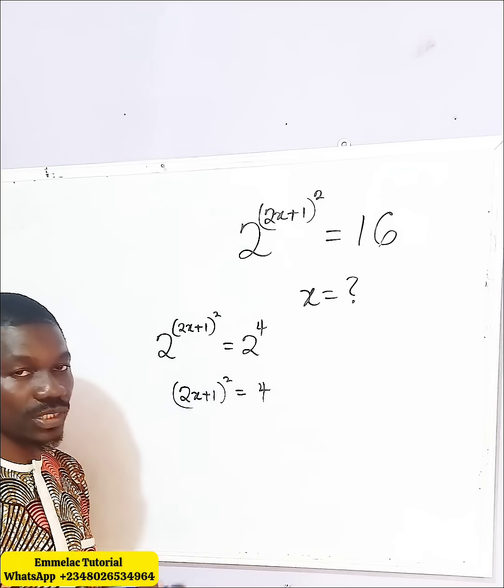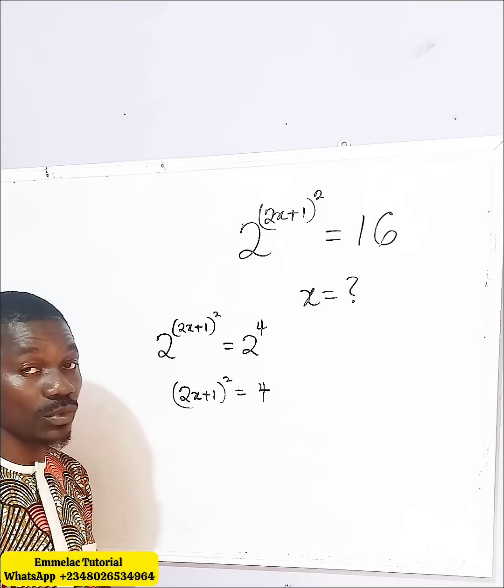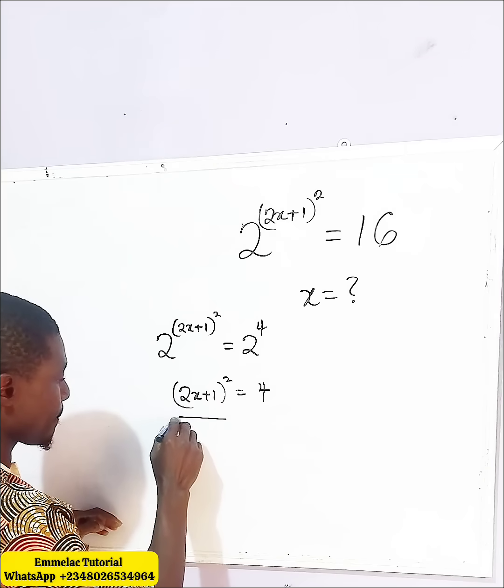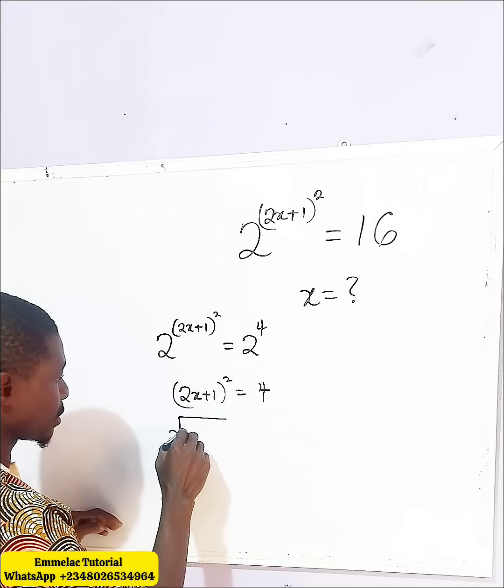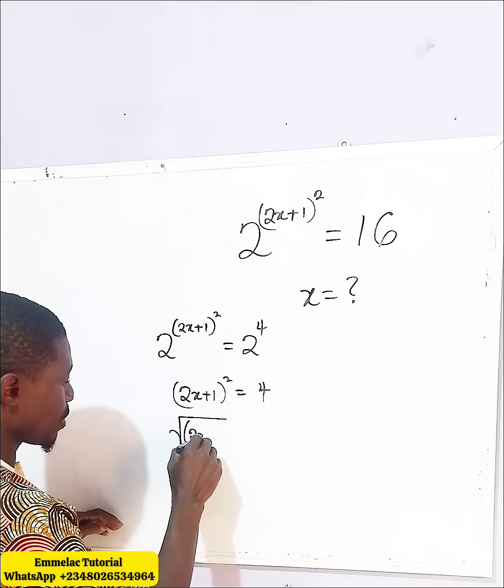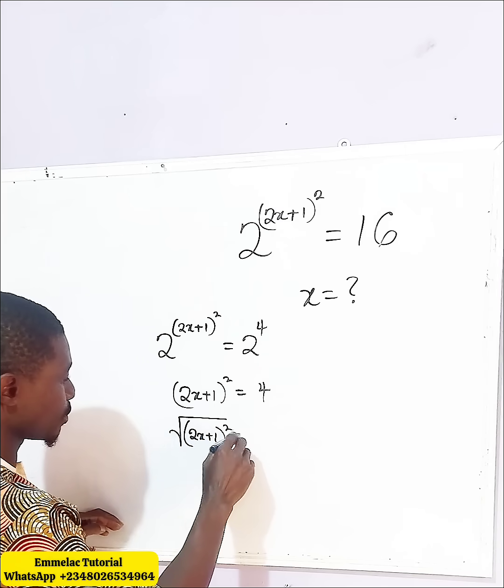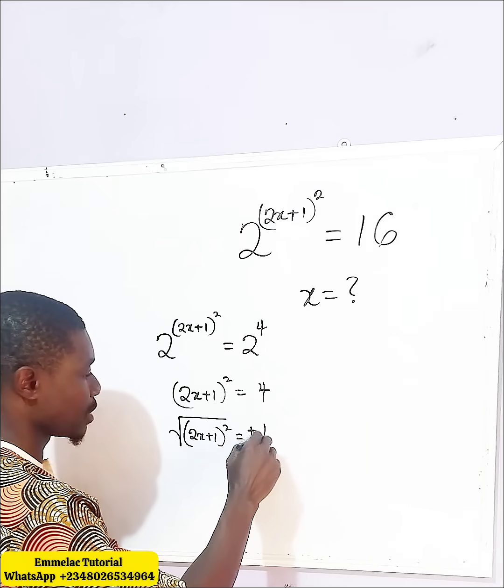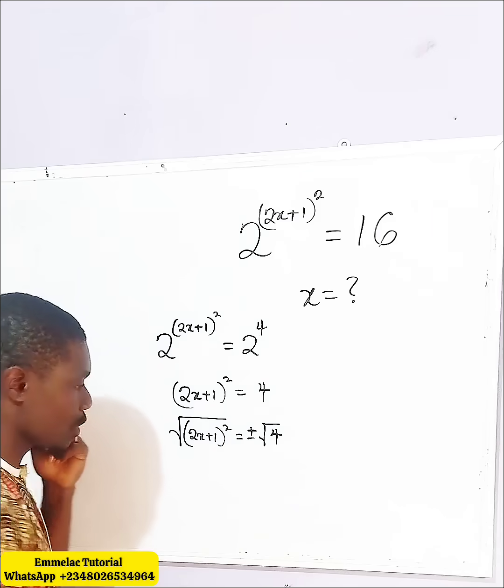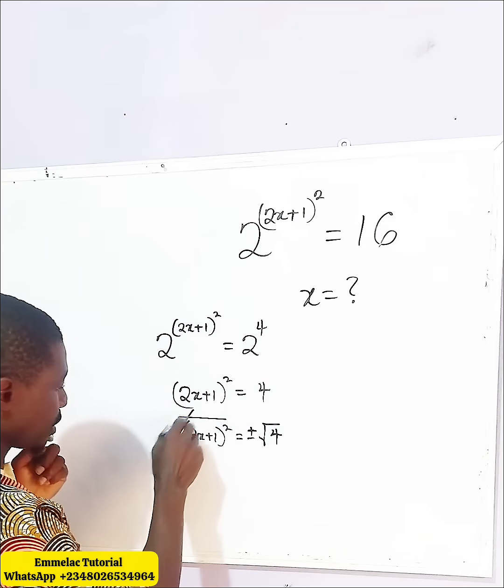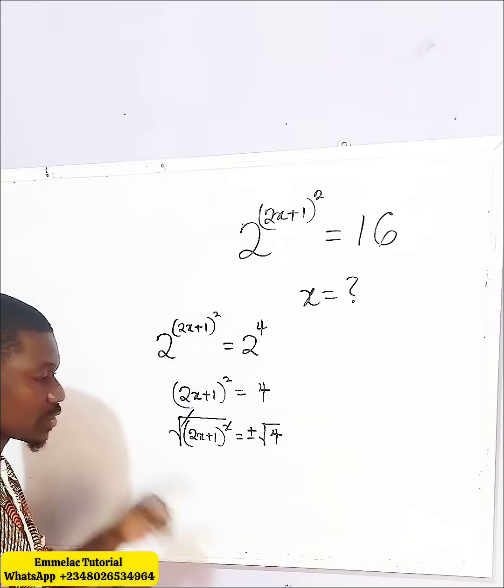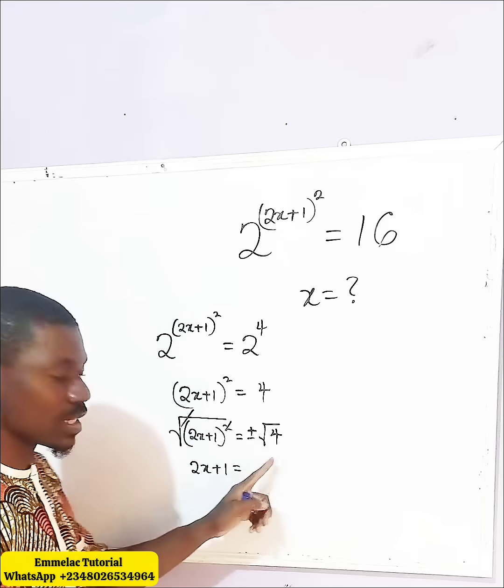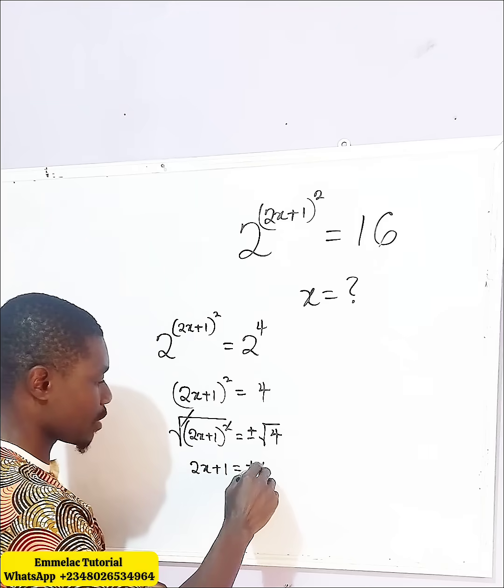Now, for us to undo this square here, let us square root both sides. We have (2x plus 1)^2. Now as we square root this side, we have plus or minus square root over 4. So this square root undoes this square, so we are left with 2x plus 1 equals plus or minus 2.